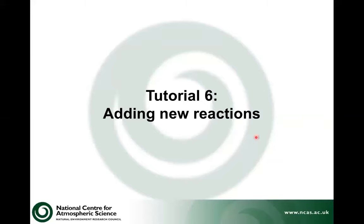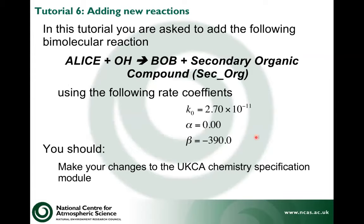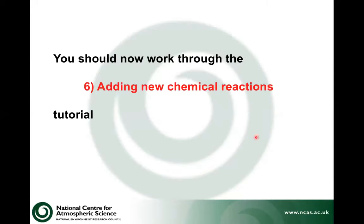Now we're going to think about adding new chemical reactions. In this tutorial you'll learn about the different types of reactions UKCA considers: bimolecular, termolecular, heterogeneous and photolysis. The format of how these are defined within a single master file for the mechanism used in UKSM1 is covered — they're similar for each type but slightly different. If you have a reaction that doesn't follow the standard form, you have to add special code in some of the other UKCA routines. In this tutorial you're asked to add a specific reaction with given coefficients and make changes in the chemistry specification module. So now you should work through the adding new reactions tutorial.